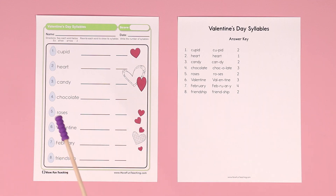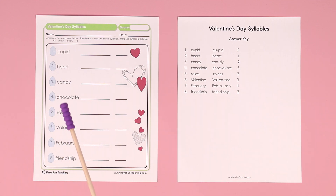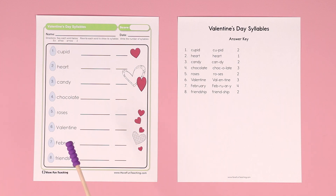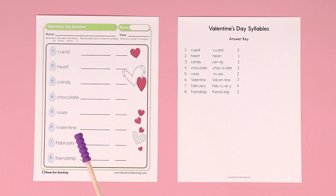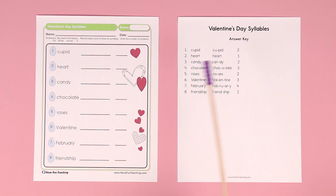Val-en-tine — three syllables. February — fe-bu-ware-ree — four syllables. And friendship — friend-ship — two syllables. This does include an answer key.